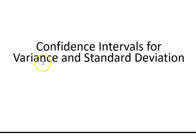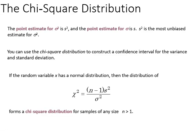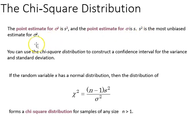This presentation is going to look at confidence intervals for variance and standard deviation. First we need to find the point estimate, and for the variance of the population that is going to be the sample variance, and for the standard deviation of the population it will be the sample standard deviation. From that we can use a chi-square distribution to construct a confidence interval for both the variance and the standard deviation.